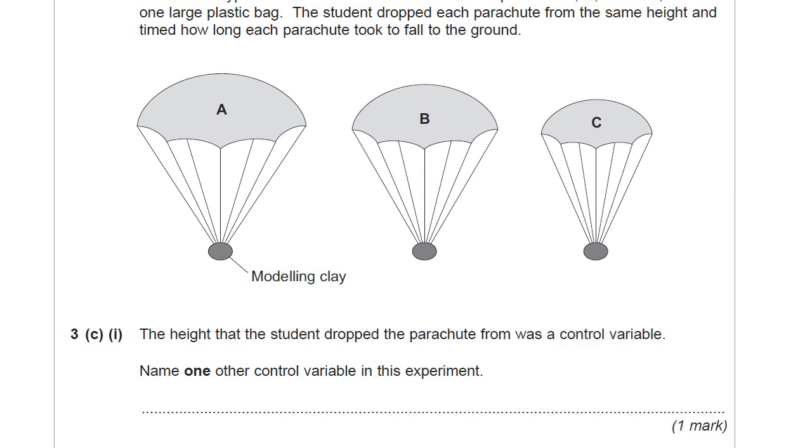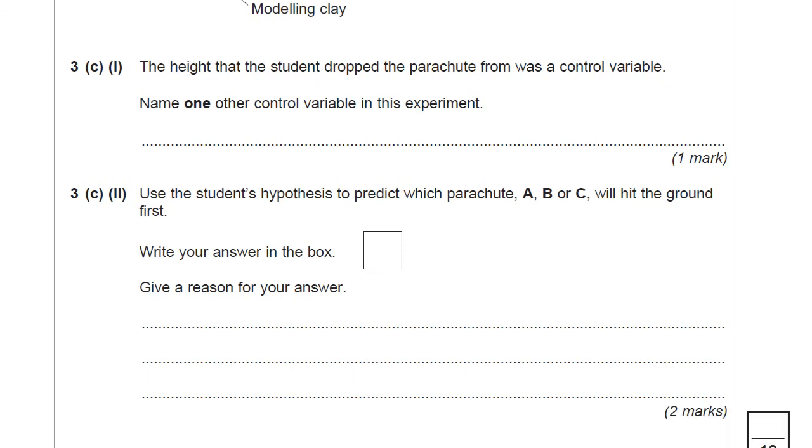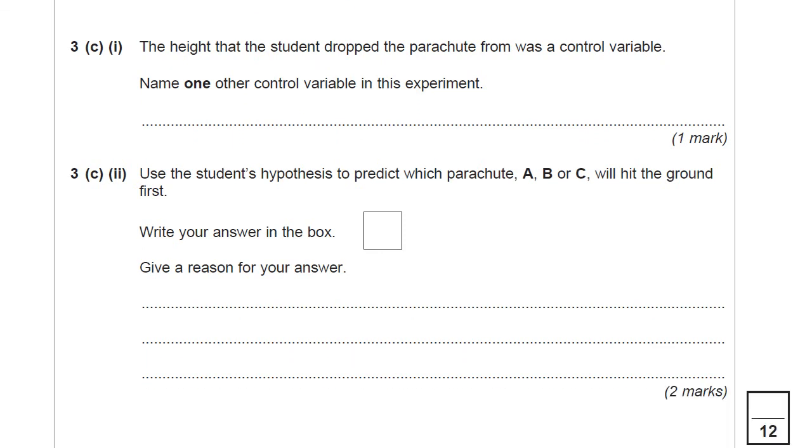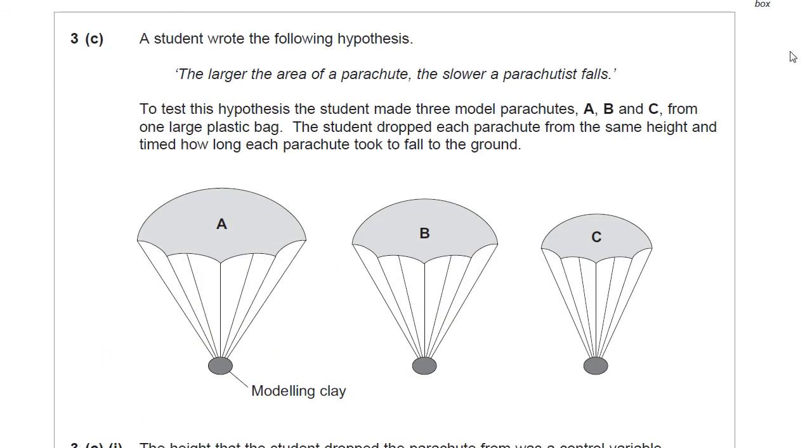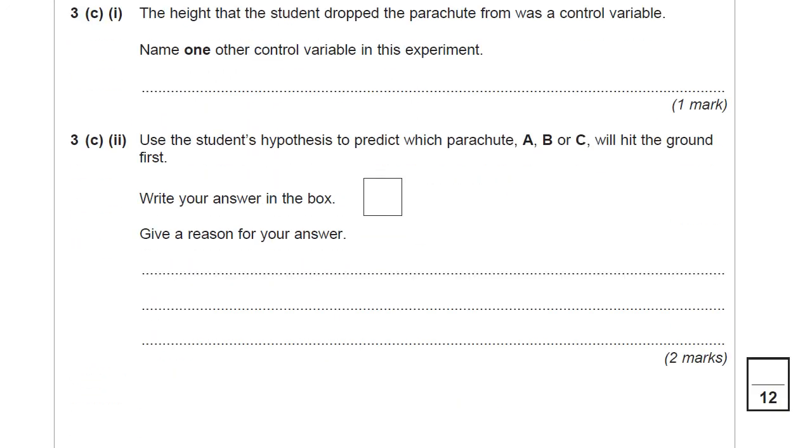Last part of question three then. Another long question. Using the student's hypothesis to predict which parachute, A, B or C, will hit the ground first. Write your answer in the box and give yourself a reason. So let's have a quick look back at this hypothesis. Larger the area, slower the parachutist. So the largest area is A, that's the slowest. We need to predict which one the fastest one will be. Have a little go at that and then come back and check your answer.